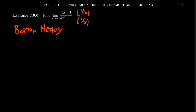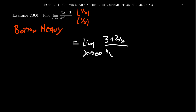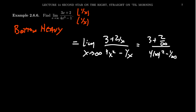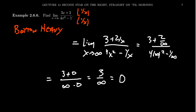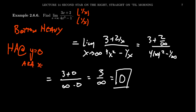Multiplying top and bottom by 1 over x, we get the limit as x approaches infinity of 3 plus 2/x divided by 4x squared minus 1/x. Plugging in infinity: the numerator gives 3 plus 2/infinity, and the denominator gives 4 times infinity squared minus 1/infinity. The division-by-infinity terms go to 0, so we get 3 plus 0 over infinity minus 0, which simplifies to 3 over infinity, which equals 0. This is what happens with bottom-heavy rational functions — they have a horizontal asymptote at y equals 0, the x-axis.